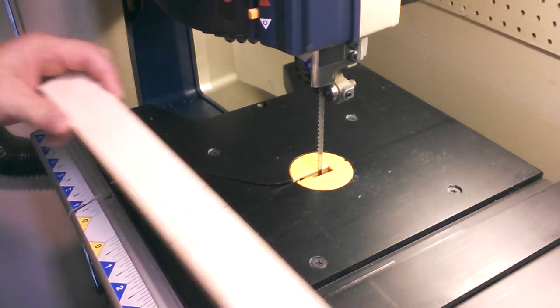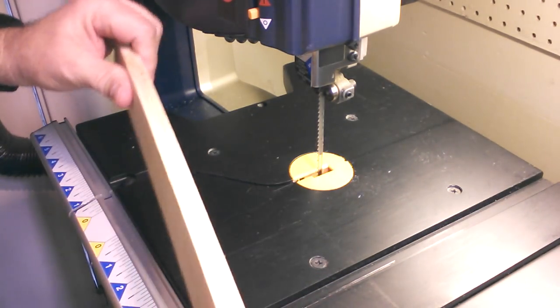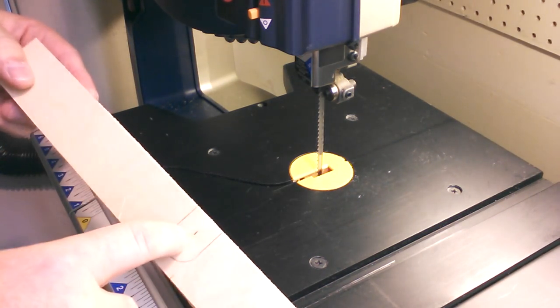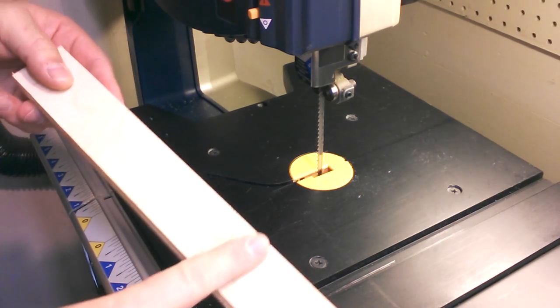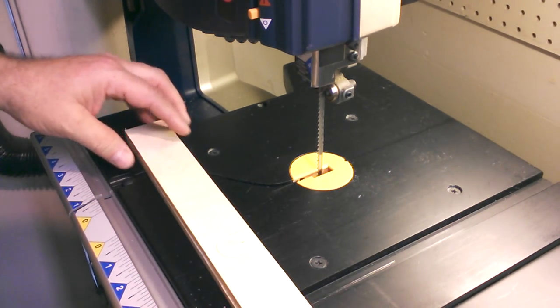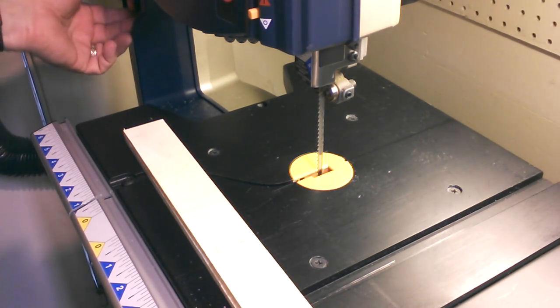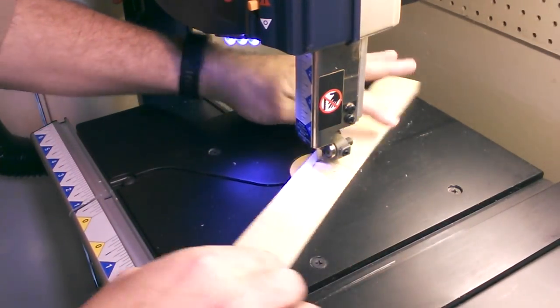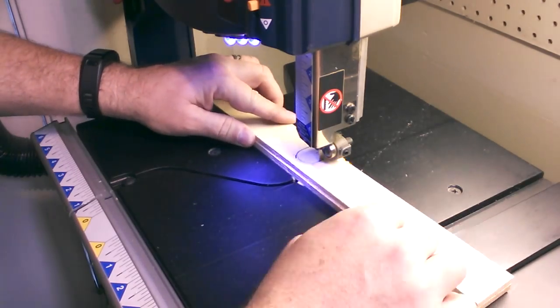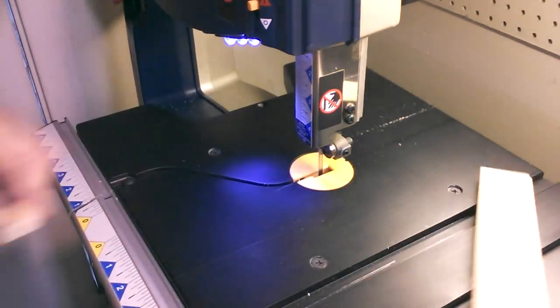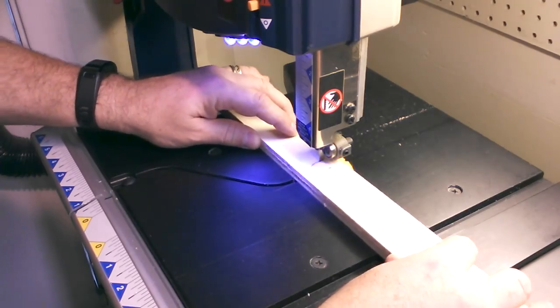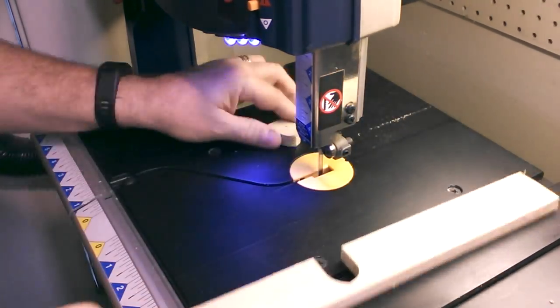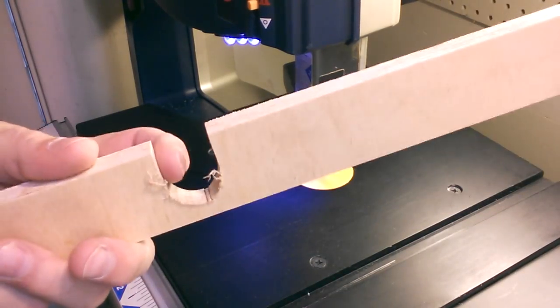All right guys, I've got these glued up now. Really, really rigid, which is good. Not that I'm going to put a lot of load on this, but now I just need to cut this shape out of both of them. So I'm going to do that. Here's the little band saw. Now I'm just going to clean this up on a sander.